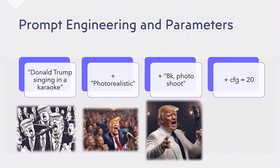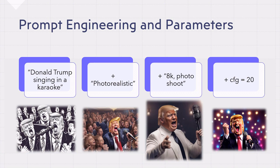You then add: 'I want the image in 8K, looking like a photoshoot.' Now you have Donald Trump looking like Frank Sinatra, with quite good overall quality. But then we play with the parameters of the AI — specifically one called the guidance scale, which is like the temperature of the AI. Setting the guidance scale to 20 makes the image more imaginative, losing some photorealistic context while becoming more vibrant.